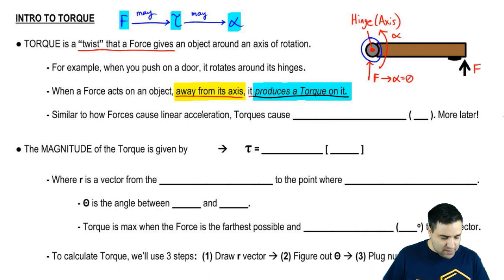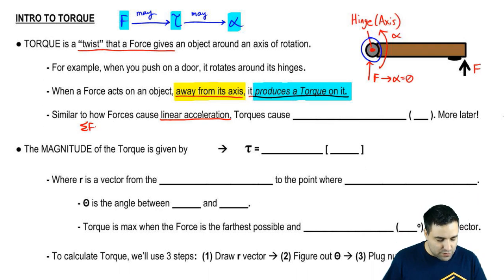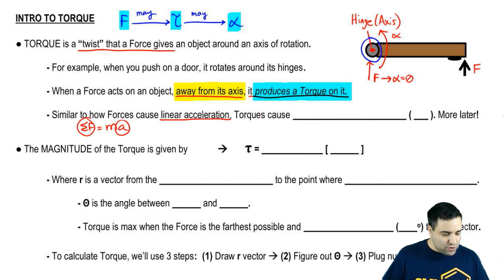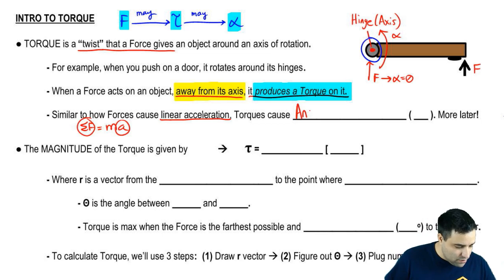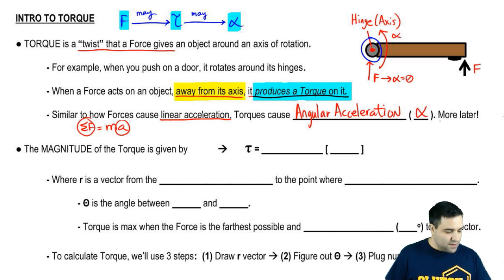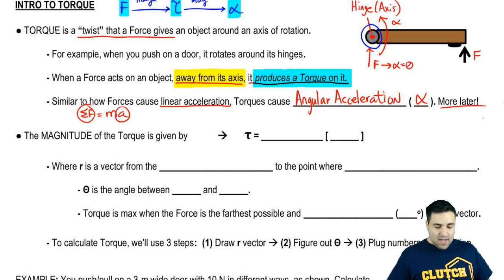Similar to how forces cause linear acceleration — sum of all forces equals ma — as long as you have a net force you get an acceleration. It's the same thing with torques: torques cause angular acceleration.